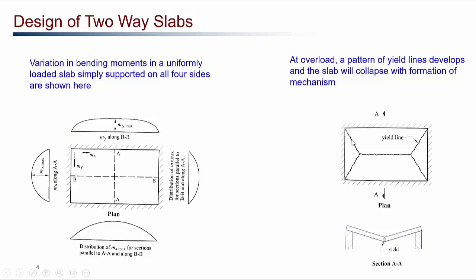If the two-way slab is overloaded, a pattern of yield lines will develop and the slab will fail with the formation of yield lines as shown. This is exactly the tributary area of the two-way slab as well. The tributary area for the longer beam will be trapezoidal load, whereas the shorter beam will carry a triangular load. Similarly, the other beams carry triangular and trapezoidal loads respectively.